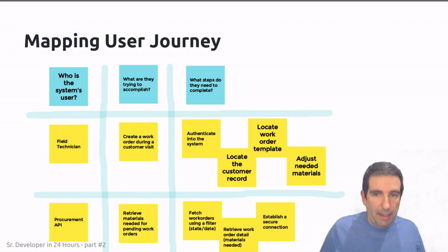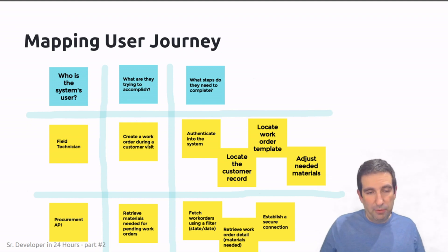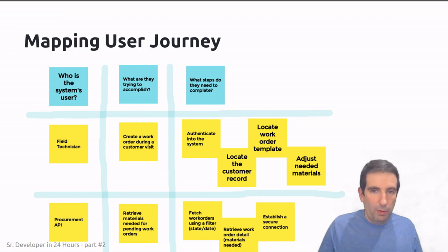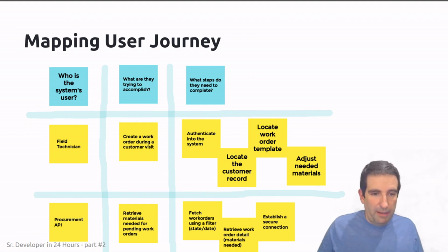Here's another example where the user is not a human being — the user is actually another system, the procurement API. Keep in mind that your user might be a human or another system accessing your system programmatically. In this hypothetical case, the procurement API wants to retrieve the materials needed for pending work orders. Again, we have a user, what they're trying to accomplish, and the steps they need to complete to achieve their goal.